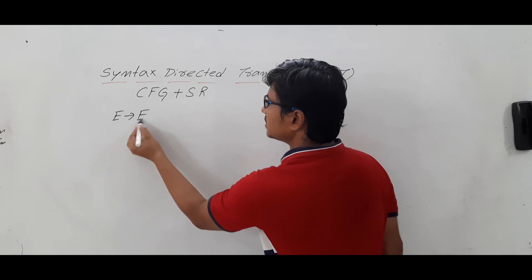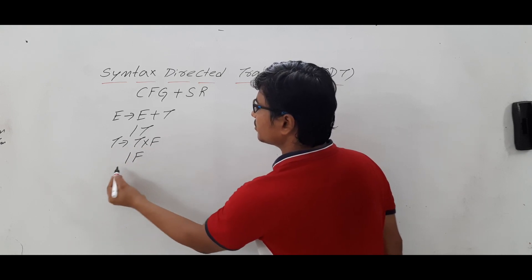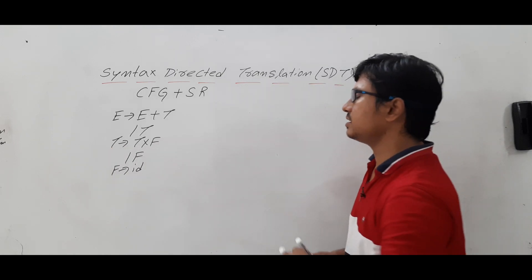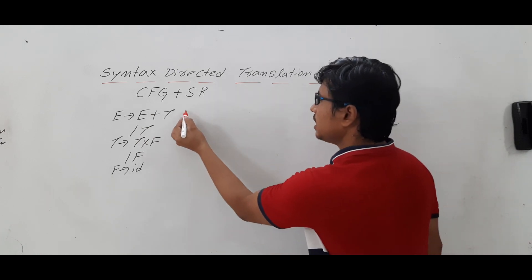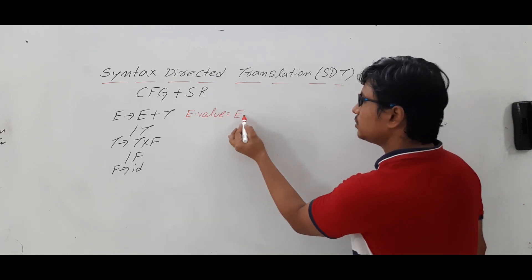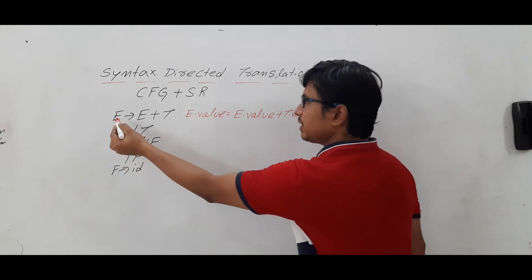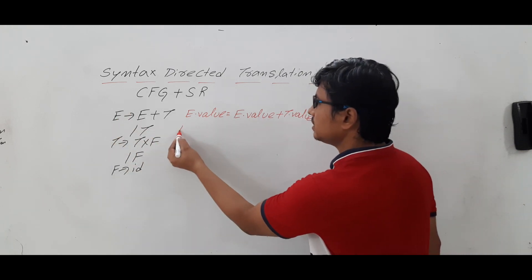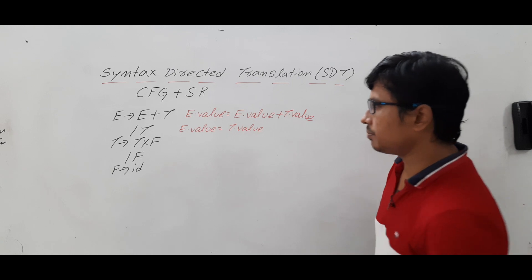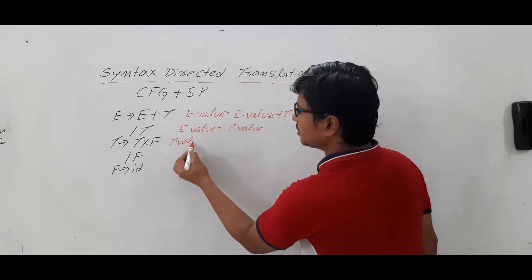E determines E plus T or T; T determines T star F or F; F determines ID. Now this is the context free grammar. Let me define the semantic rules. Whenever I have a production E determines E plus T, I want to apply a rule called E dot value is equal to E dot value plus T dot value. This is the semantic rule. Similarly, whenever there is a production E determines T, I want to perform E dot value is equal to T dot value. Similarly, whenever T determines T star F, I want to write the rule as T dot value is equal to T dot value into F dot value.